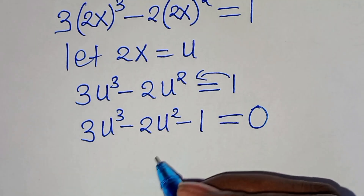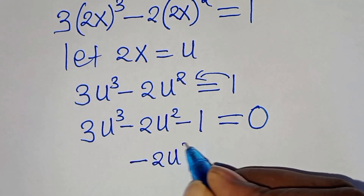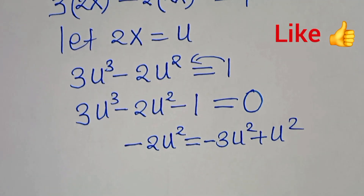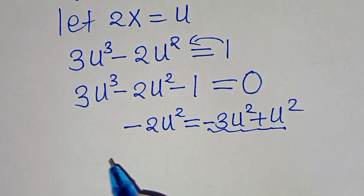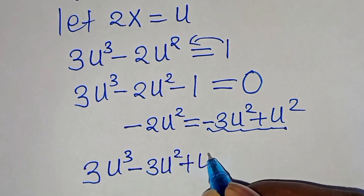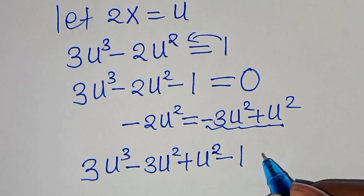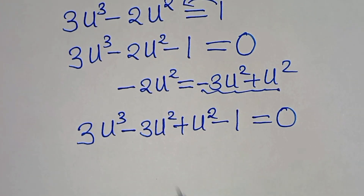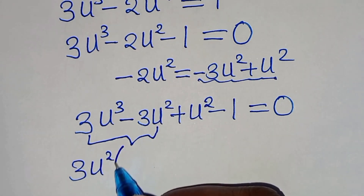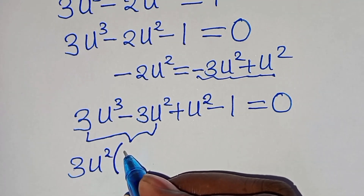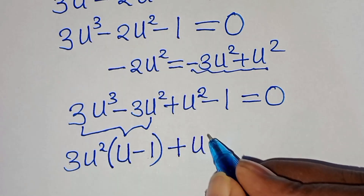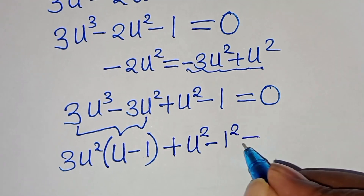The next step from here, we can express minus 2u to the power of 2 as minus 3u to the power of 2 plus u to the power of 2. Substituting this back to the equation, then we have 3u to the power of 3 minus 3u to the power of 2 plus u to the power of 2 subtract 1, this is equal to 0. So, the next step from here, we have that 3u squared is common, so we can factor out 3u to the power of 2, so that into the parenthesis we have (u minus 1), then plus we have u to the power of 2 minus 1 to the power of 2, this is equal to 0.